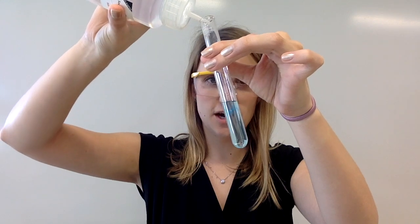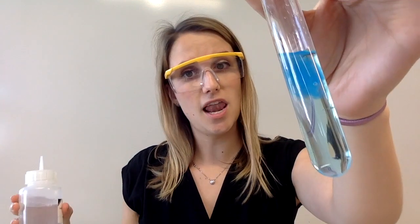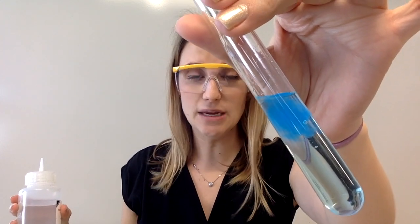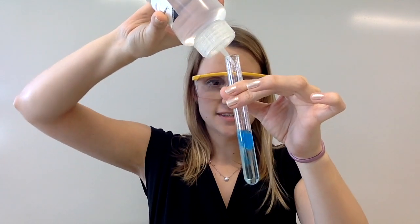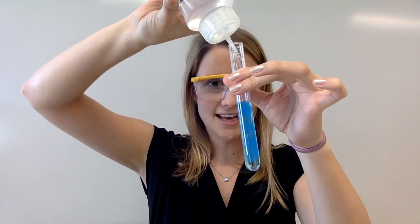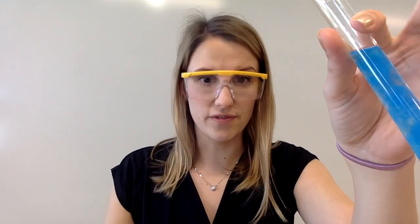So copper two plus with sodium hydroxide you get this light blue precipitate, which just means a solid is being formed. Now if I add the sodium hydroxide in excess, which means loads of it, what you can see is you just make more of it, so that means the precipitate is insoluble in excess.